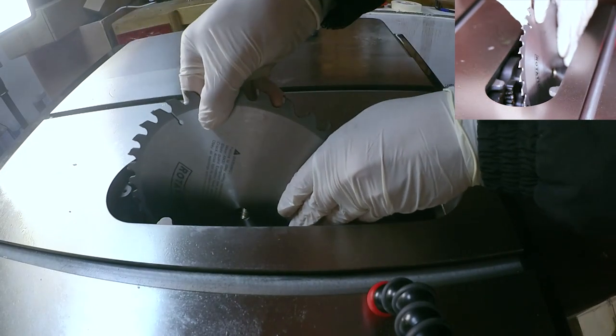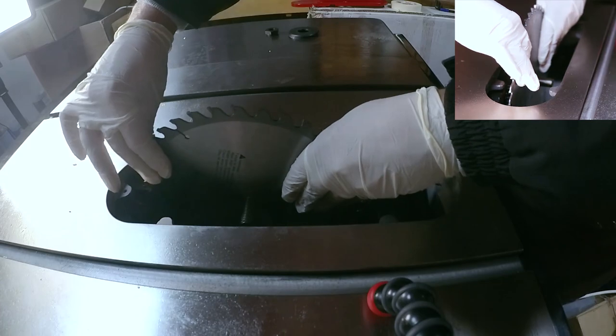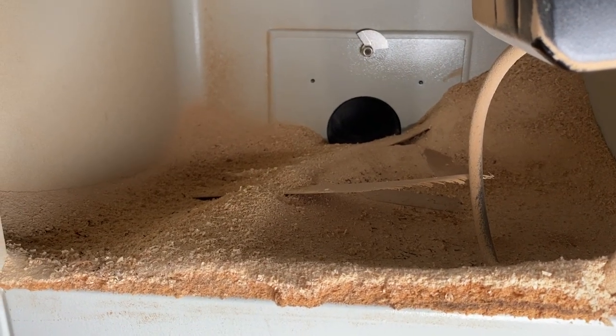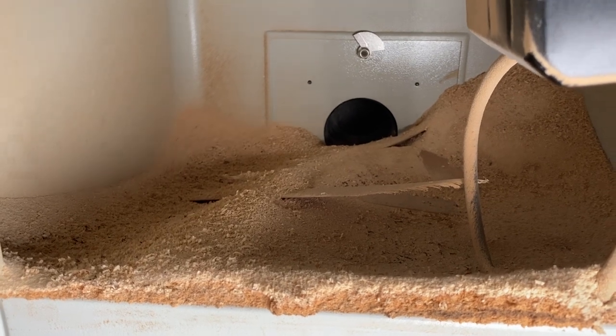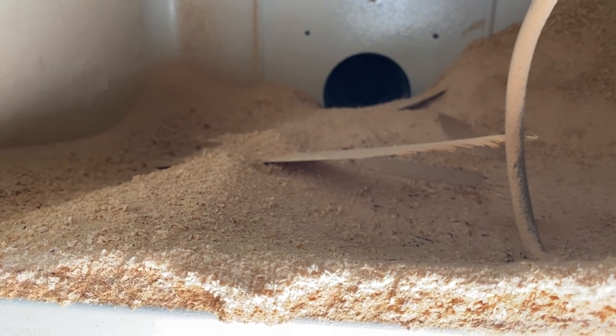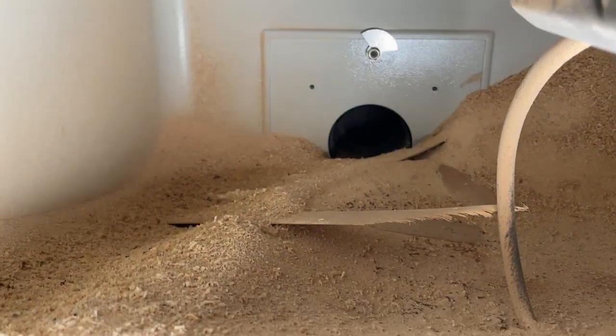If you have a habit of dropping off your saw blade when changing it, then here is a tip for you. Just keep one inch or so of sawdust covering the bottom of your table saw cabinet to act as a pillow when receiving the falling blade. This will save you from breaking a tooth on your saw blade.